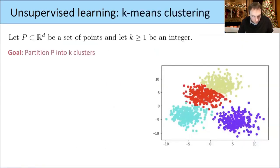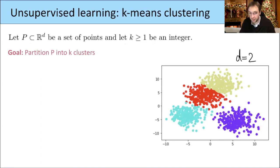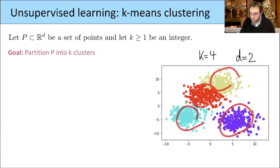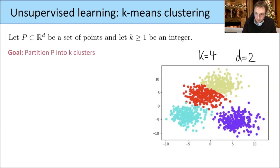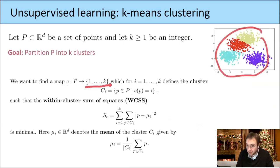More precisely, we have a subset P in R^d — in the homework d will be two. We fix some integer k, which we choose ourselves (and later we discuss how to choose k). We try to find k different clusters. Here in the picture k is four. The idea is to partition the set P into k different subsets, the so-called clusters. What we want to find is a map c from P into the set {1, ..., k}.